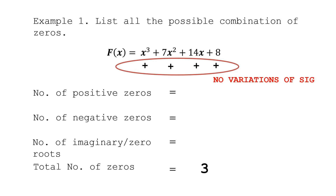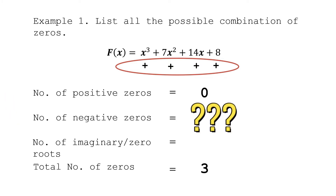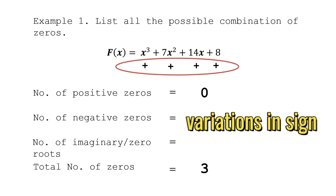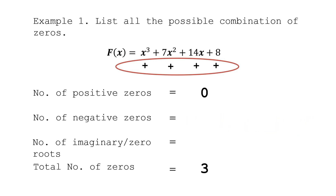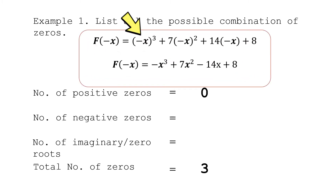Since all signs are positive, we have no opposite signs, meaning we have no variation in sign. That means we have no positive zeros. It would be useless to try positive values of x as zeros of this function, because according to Descartes' Rule of Signs there are no positive zeros. To find the number of negative zeros, we count the variations in sign of P(−x) — that is, we substitute −x for x.